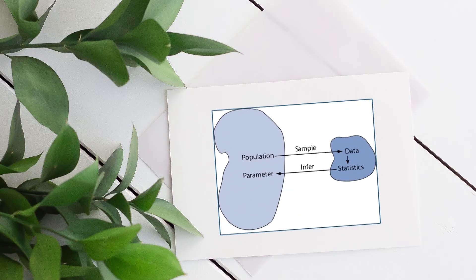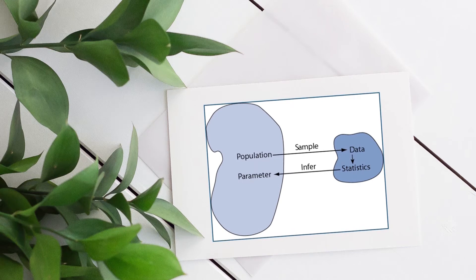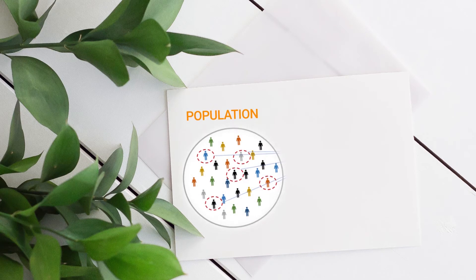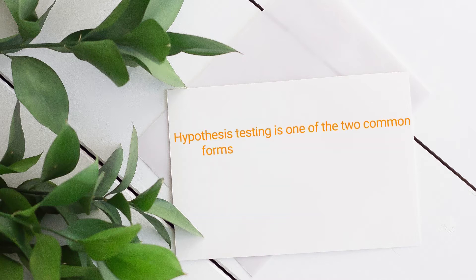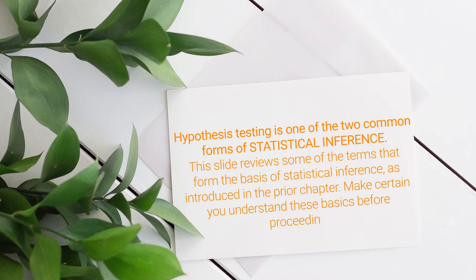In coming sessions, we are moving towards advanced ways of testing — either the t-test, z-test, different types of tail tests, and other tests. We see that the population is there, then you have a sample, and then data statistics play an important role. The size of the population is very large whereas the sample is small. Hypothesis testing is one of the two common forms of statistical inference.